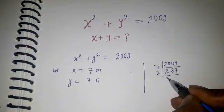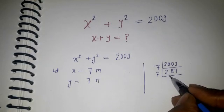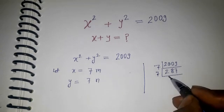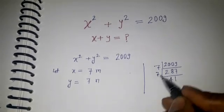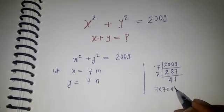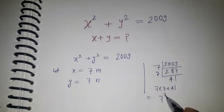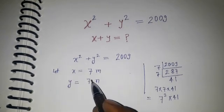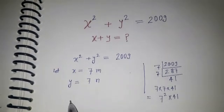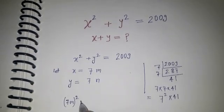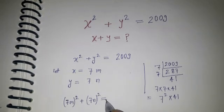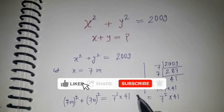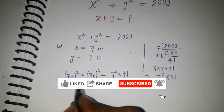Dividing 2009 by 7 once more gives us 41. So 2009 equals 7 times 7 times 41, that is 7 squared into 41. This 7 squared is a factor of 2009, and that is why I am taking the variable with a factor of 7. I can write this equation as: (7m) squared plus (7n) squared equals 7 squared times 41.